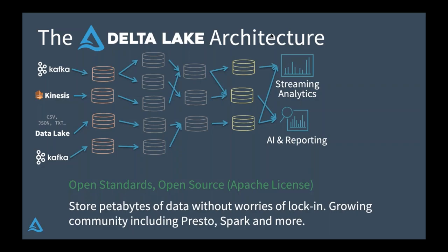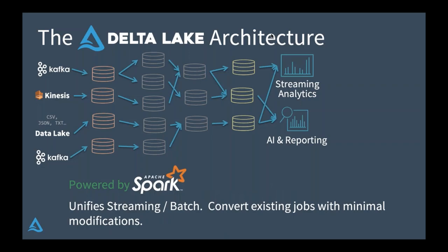Another key aspect of Delta Lake is it's based on open standards and it's open source — full Apache license, no silly common clauses. Data has a lot of gravity, and you wouldn't want to put petabytes of it in a black box. You can store massive amounts of data without worrying about lock-in. Underneath the covers, Delta is actually storing your data in Parquet, so you can read it with other engines. Worst case, if you decide to leave Delta Lake, all you need to do is delete the transaction log and it becomes a normal Parquet table. And Delta Lake is deeply powered by Apache Spark, so existing Spark jobs — whether streaming or batch — can easily be converted to get all the benefits of Delta without rewriting from scratch.